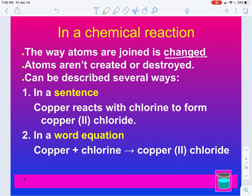Atoms aren't created or destroyed. This is the law of conservation of mass. We're not going to create or destroy any atoms from the reactant side to the product side. Chemical reactions can be described in several ways. One can be a sentence: copper reacts with chlorine to form copper (II) chloride. Or it could be a word equation: copper + chlorine yields copper (II) chloride.